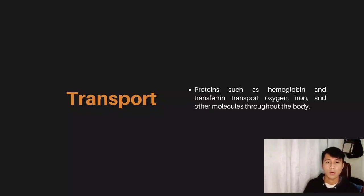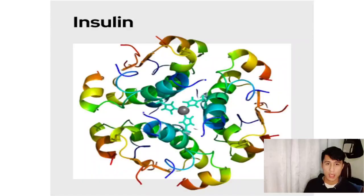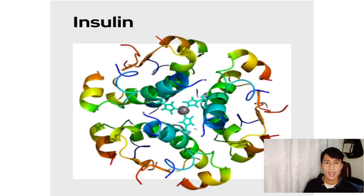Next, hormonal proteins such as insulin regulate growth and metabolism by acting as hormones. One example of a hormonal protein is insulin. It is produced by beta cells in the pancreas and regulates blood sugar levels by promoting glucose uptake into cells and stimulating the conversion of glucose into glycogen in the liver and muscle tissue. In this way, insulin helps to maintain overall glucose homeostasis and prevent high blood sugar levels.